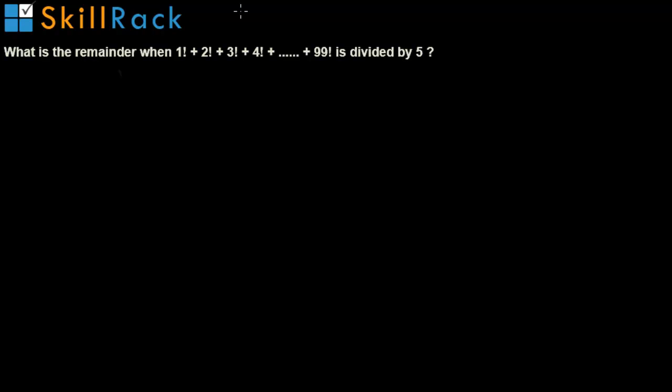The given problem is: what is the remainder when 1 factorial plus 2 factorial plus 3 factorial till 99 factorial is divided by 5?